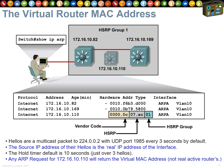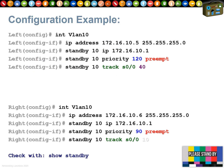The active router and the standby router talk to each other with multicasts every three seconds — that's how they keep track of each other. If you're setting up an access list or policy control, make sure UDP port 1985 is allowed between them. If they miss three hellos, the standby router assumes the active router is dead and takes over. Because the virtual MAC address doesn't change, clients don't need to learn a new MAC address.